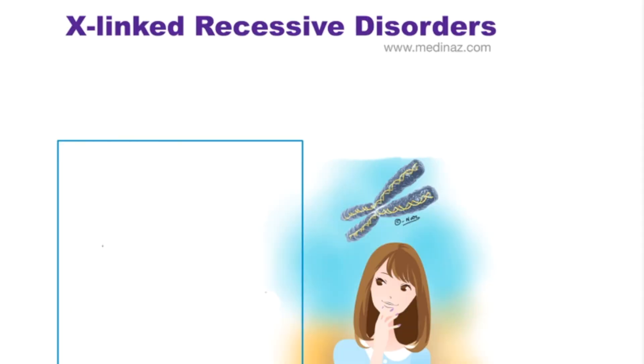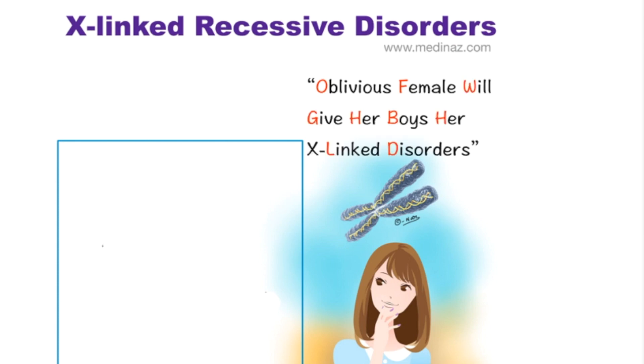Today I have a mnemonic for X-linked recessive disorders. And the mnemonic is: oblivious female will give her boys her X-linked disorders.